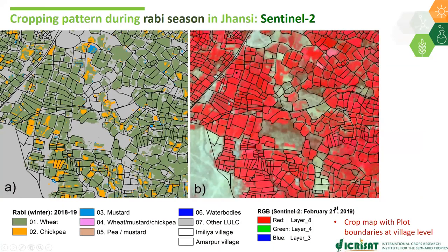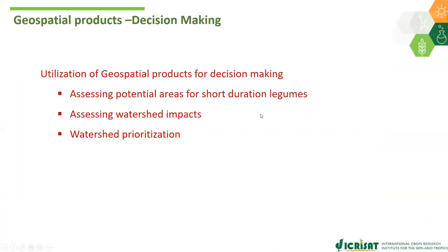These maps are also used at field level — we overlaid field boundaries to identify which fields are affected, which is an important input for yield assessment studies. The left side shows the classified map and the right side shows the Sentinel-2 false color composite, with plot boundaries that can be extracted from high-resolution Sentinel images.